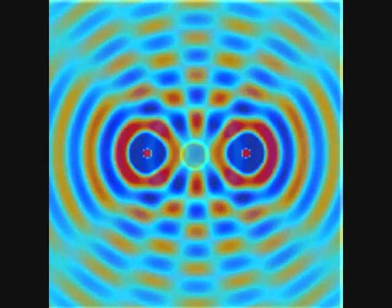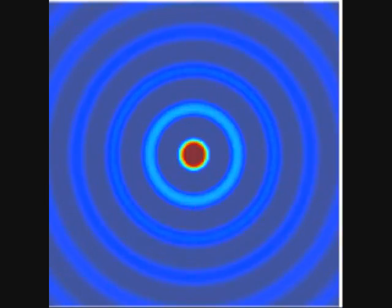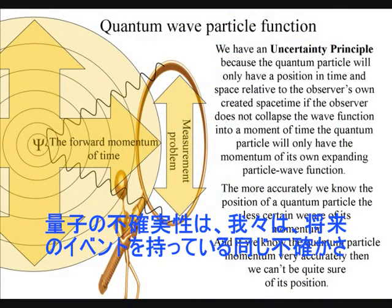But when we zoom in on an individual atom we find time-independent quantum mechanics, and there is no flow or arrow of time, and all we have is the measurement problem.